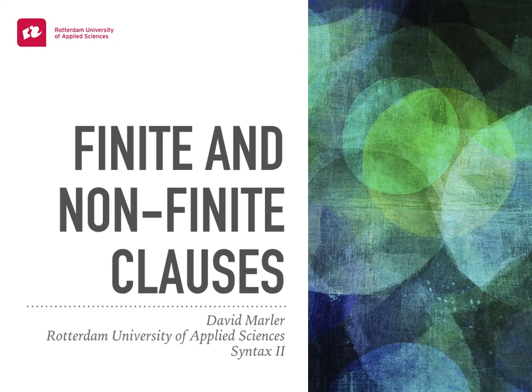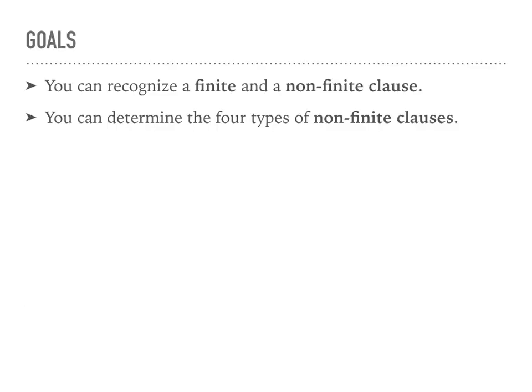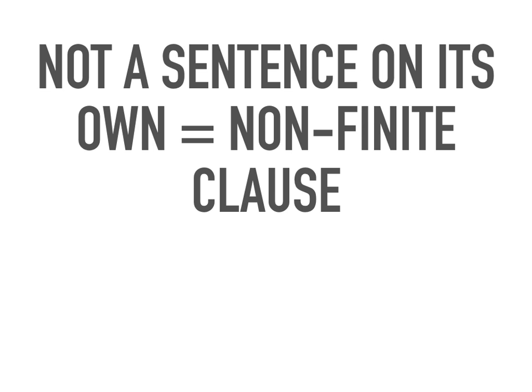Hello everyone, and welcome to this mini lecture on finite and non-finite clauses. This week we're going to be talking about finite and non-finite clauses, and we're going to talk about the four different types of non-finite clauses. We're going to begin first with a few words, and I want you to tell me whether or not on its own it's a sentence. Let's look at the first one: 'to buy food.' Most likely you've said 'to buy food' is not a sentence on its own, but it does have a verb, and because of this we're going to call it a non-finite clause when it's in a larger sentence.